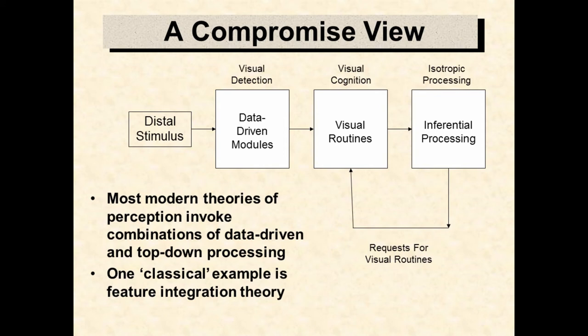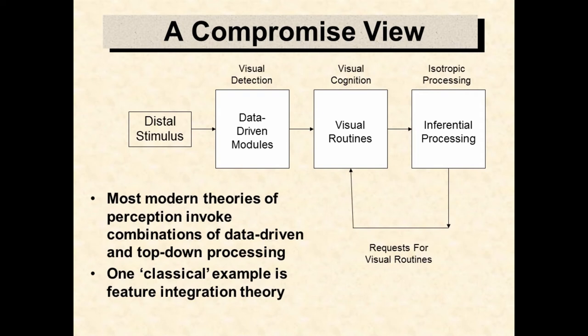Pure data-driven and pure theory-driven models of perception have problems, so many modern theories are compromises that incorporate both. A modern theory would include data-driven modules that detect various features — low-level vision — as well as theory-driven processes that link knowledge of the world to visual information, so that we can classify objects and know what they can be used for — high-level vision. A modern theory would also have a middle process called visual cognition that acts as a go-between, where high-level vision can request visual cognition to invoke attentional processes called visual routines that return particular information, for instance by computing the relationship between two objects.